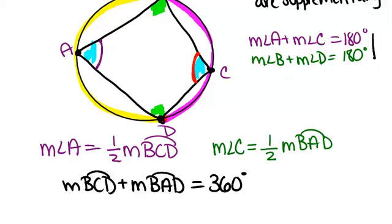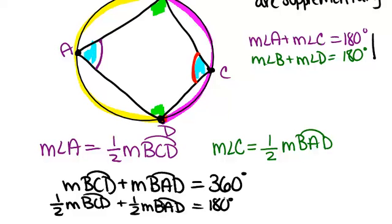So that means if we divide everything by two right here, so we have one-half the measure of arc BCD plus one-half the measure of arc BAD, that must equal 180 degrees. All we did from this equation to the second one is divide everything by two.